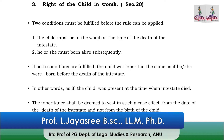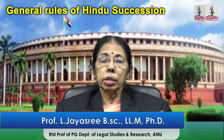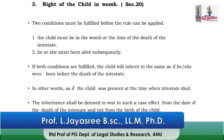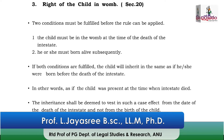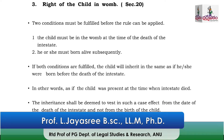The child must be in the womb at the time of the death of the intestate. Second, he or she — the child may be male or female, there is no difference — he or she must be born alive subsequently. These are the two important conditions: the child must be in the womb at the time of the death of the intestate, and the child has to be born alive subsequently.